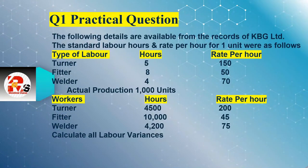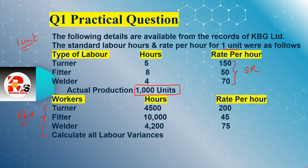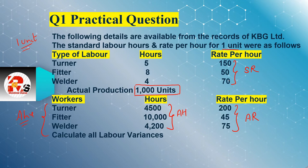The question: the following details are available from the records of KBJ Limited — standard labor hours and rate per hour for one unit. Here we have 3 types of labor: Turner, Fitter, and Welder. Standard hours and actual production is given as 1000 units, so we will calculate the standard hours. The actual hours are also available, and we will calculate the actual rate: 150, 50, and 70.